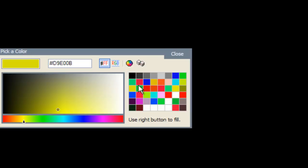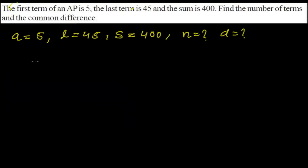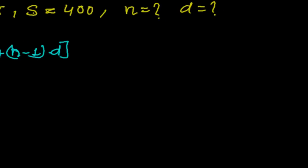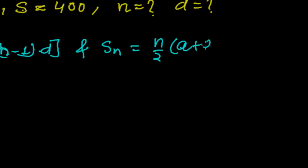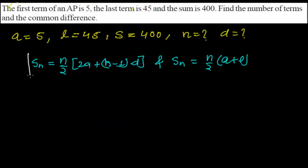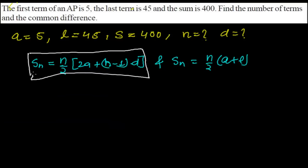There are two formulas for the sum of n terms. The first is S_n = n/2 × (2a + (n−1)d). The second formula, used when the last term l is given, is S_n = n/2 × (a + l). Depending on the situation, we use one or the other.